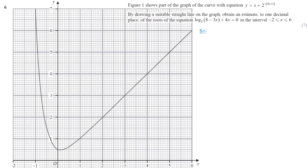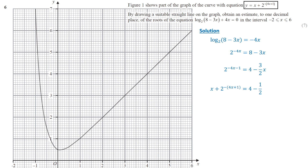In this question, we are asked to estimate the roots of the logarithmic equation by drawing a line. We will manipulate the logarithmic equation to compare with y equals x plus 2 raised to the negative 4x plus 1. Log base 2 of (8 minus 3x) equals negative 4x. In exponent form, 2 raised to the negative 4x equals 8 minus 3x. Then we divide both sides by 2. Finally, adding x to both sides, we have x plus 2 raised to the negative 4x plus 1 equals 4 minus half x. The left side represents the equation of the given curve, and the right side is the equation of the straight line.